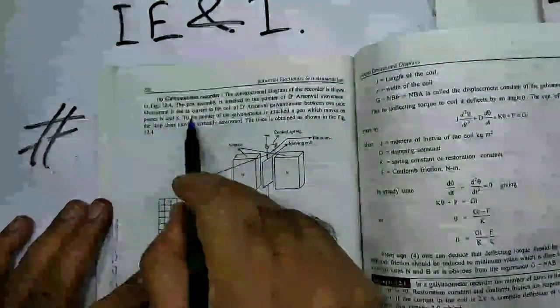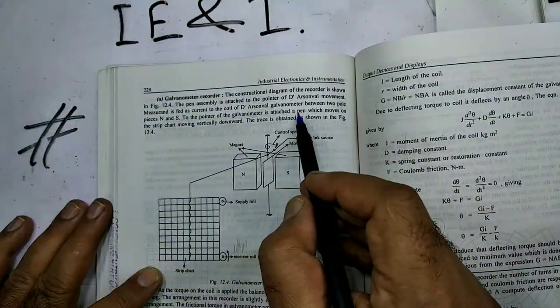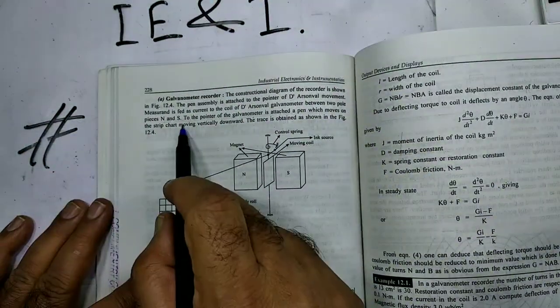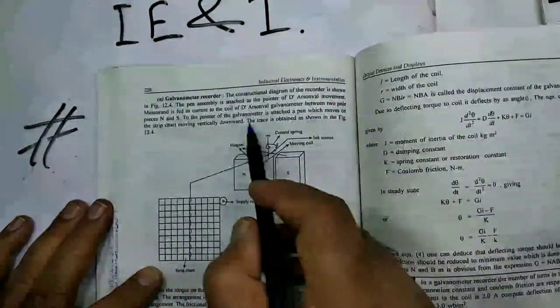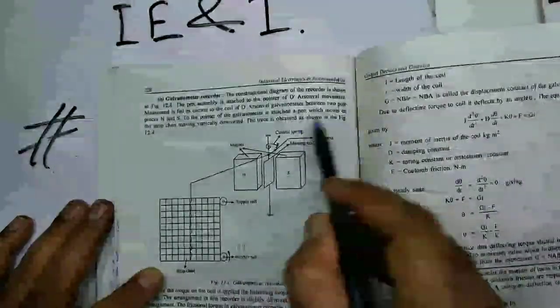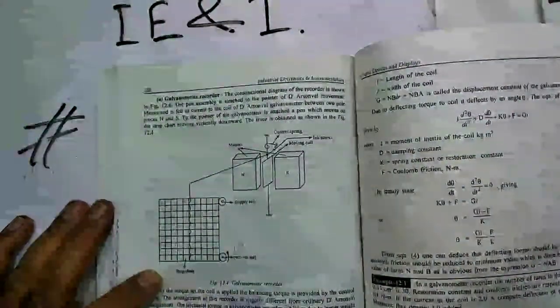Measurement is fed as a current to the coil of D'Arsonval galvanometer between two pole pieces, north and south pole. To the pointer of the galvanometer is attached a pen which moves on the strip chart moving vertically downward. The trace is obtained as shown in the figure. This is the trace.